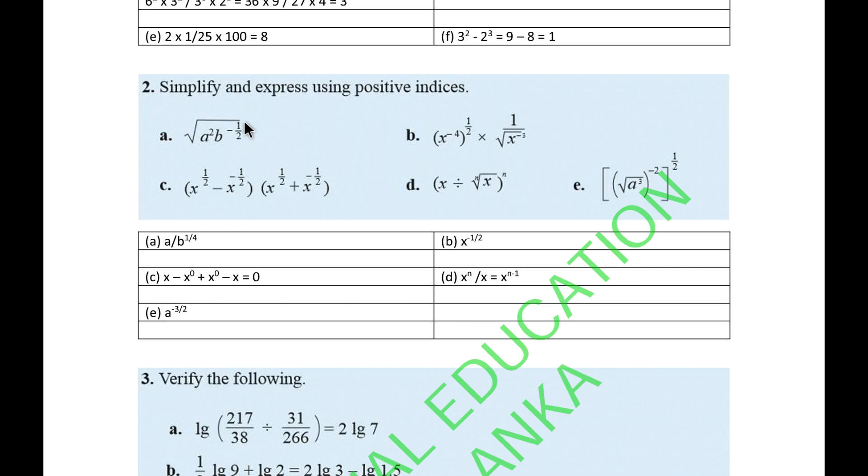Next one, simplify and express using positive indices. Here you get a to the power 2, b minus half. The square root means just a. Here comes b to the power minus 1 fourth. So when you put it down, it comes a over b to the power 1 fourth.